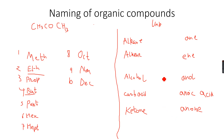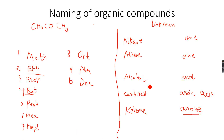Ketones are something unknown to you because you are doing them for the first time in your AS levels. That's why the name ends with 'unknown' — a different spelling, but a good way of rhyming and remembering it. So this will become prop-unknown, because there are three carbon atoms — so 'prop' — and then 'unknown'.